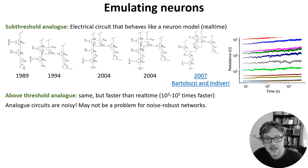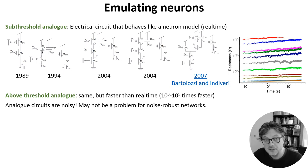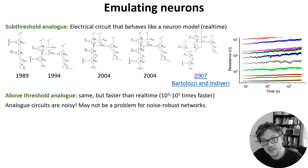It's worth noting that these analog circuits are noisy. For example, you can see here how conductances change over time with one of these technologies. This is something we have to take into account, but it may not be a problem if the underlying network is noise robust, like the brain.